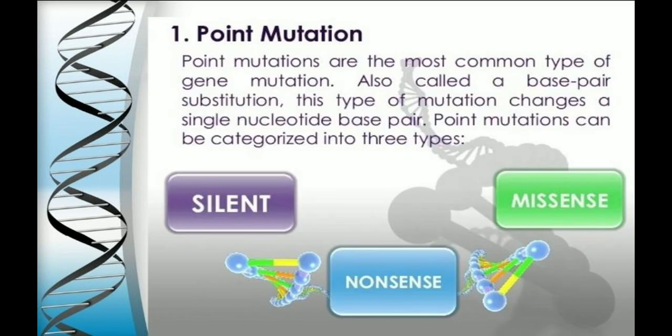The most common type of gene mutation is the point mutation, also called a base pair substitution. These types of mutations change a single nucleotide base pair.